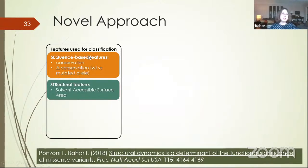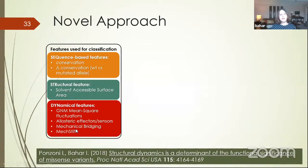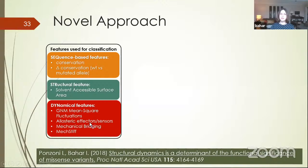What we did was to say that the large majority of studies take sequence into consideration, and even introducing structure is an improvement. But we also introduced dynamic features. We could do that because ENMs are extremely efficient — you can serially apply them to thousands of variants and easily generate data. We started with very simple features like mean square fluctuations and determined which residues are most effective in communicating allosteric signals.